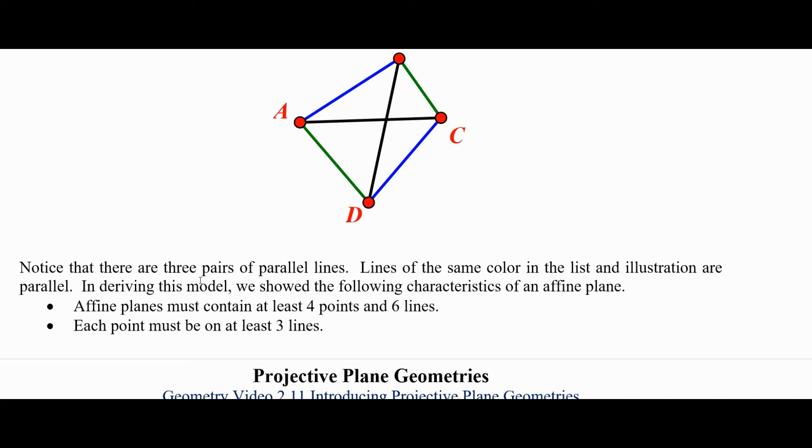We were able to prove that affine planes must contain at least four points and six lines, and each point must be on at least three lines. These are some characteristics that came out of our description.